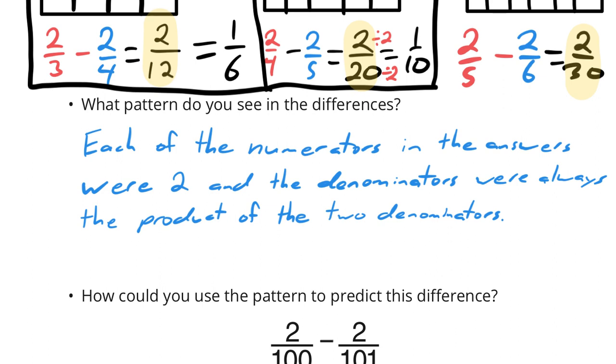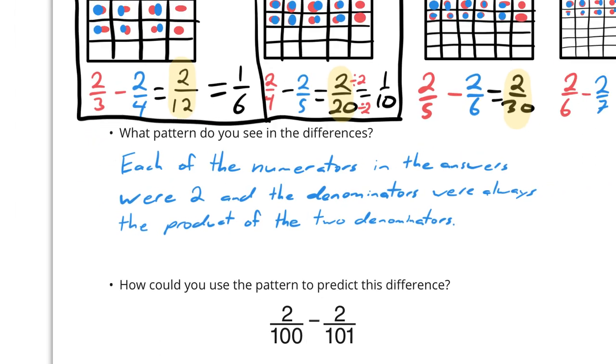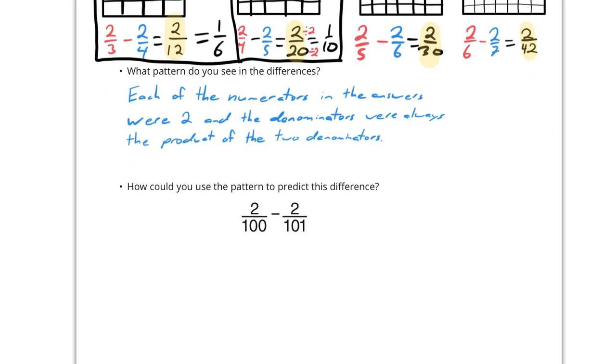How could you use the pattern to predict this difference? Well, let's see. If we had two-thirds minus two-fourths being two-twelfths, and two-fourths minus two-fifths being two-twentieths, this one is always coming right before this one, right? Three, four, they're just in order. Four, five, five, six. So if it's a hundred and a hundred and one, we could just say that we know that the numerator is going to be two, and the denominator is going to be one multiplied by the other. So the denominator will be ten thousand one hundred. That's it. That's it for today. Thanks for watching.